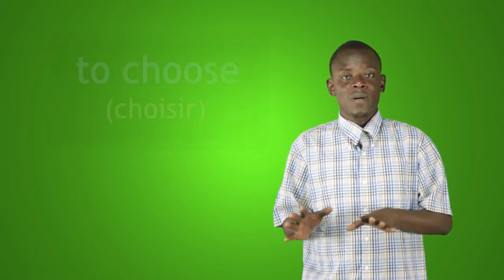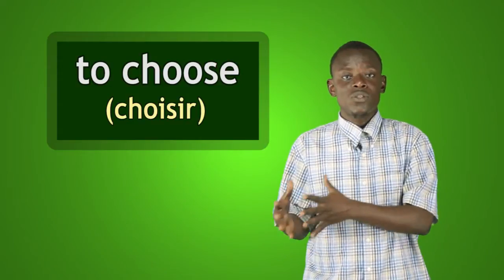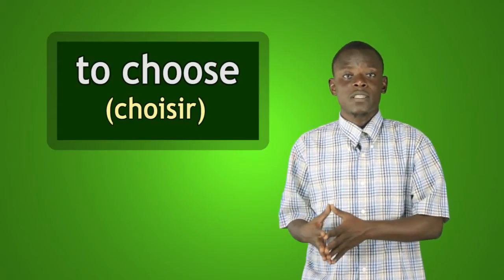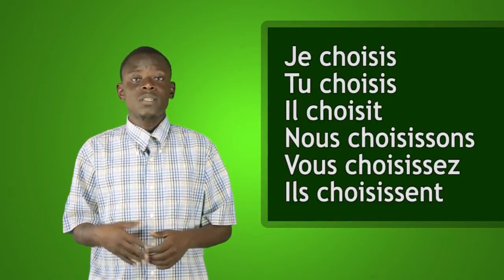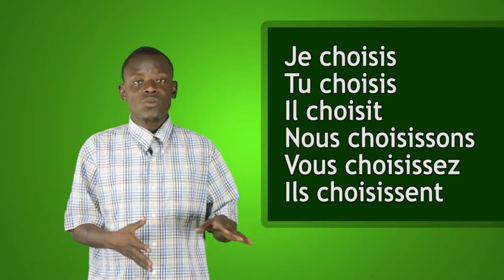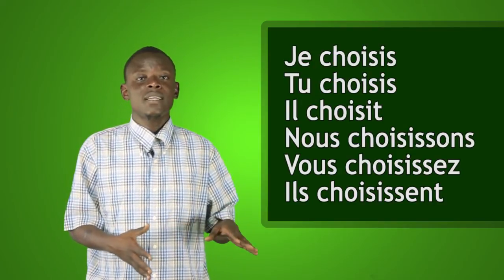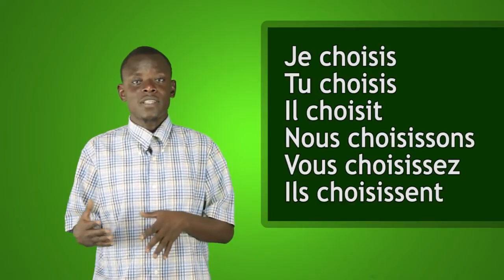Let's look at an example. The verb to choose, which is choisir in French. In French, we say: je choisis, tu choisis, il choisit, nous choisissons, vous choisissez, ils choisissent. That's in French. Now let's look at the change in English.